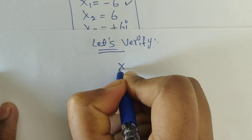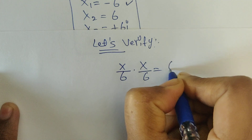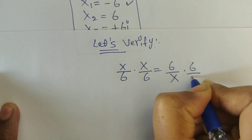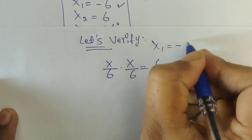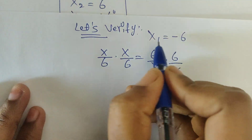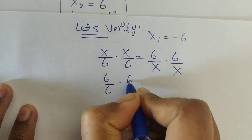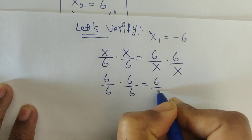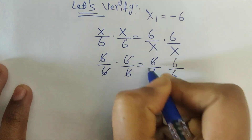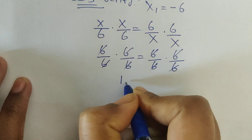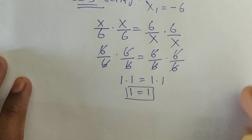The question is x by 6 times x by 6 equals 6 by x times 6 by x. Now x1 value is minus 6. Substituting: minus 6 by 6 times minus 6 by 6 equals 6 by minus 6 times 6 by minus 6. The 6s cancel, giving minus 1 times minus 1 equals minus 1 times minus 1, so 1 equals 1. Verified.